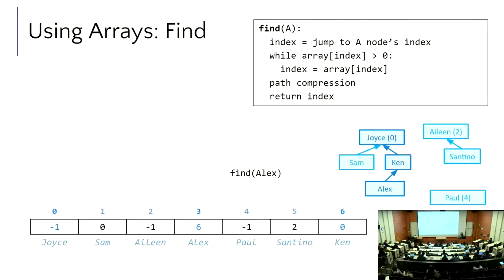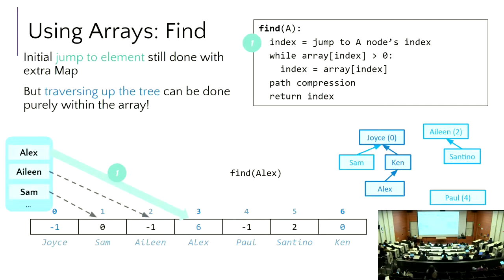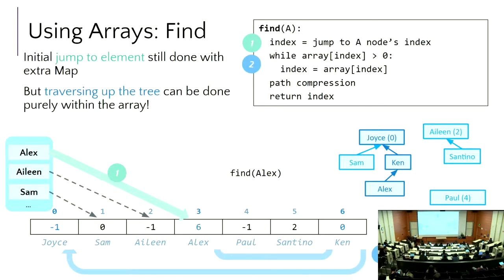Walking through find as an example: if I call find on Alex, the initial jump is done with an extra map — give it Alex as the key, get back the value three, that tells me where in the array to jump. I jump to six — that's Ken — then jump to zero — that's Joyce. I'm looping while what I'm currently looking at is greater than zero, meaning it's a branch or leaf node. This loop exits when I hit an element storing a negative value — that's the overall root. Find of Alex returns zero.